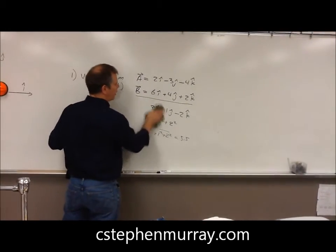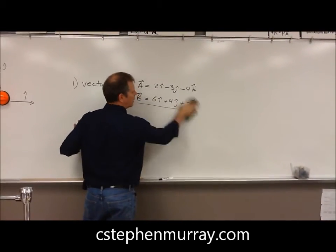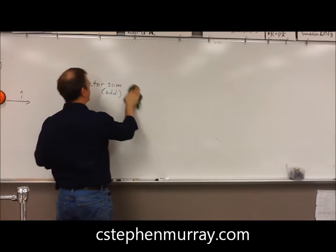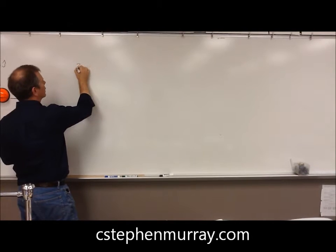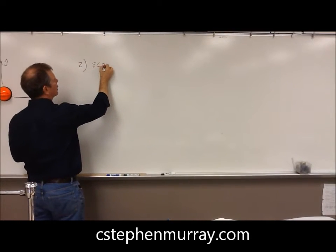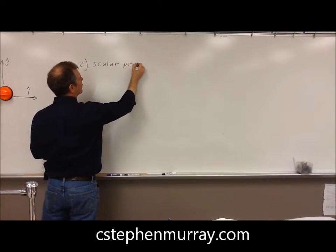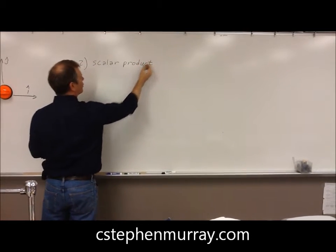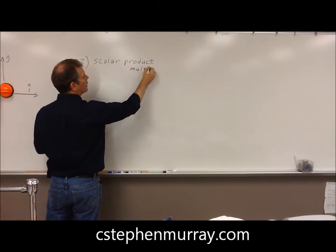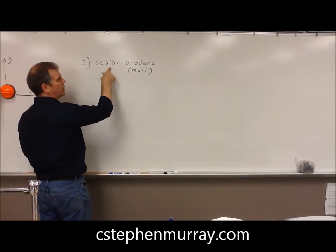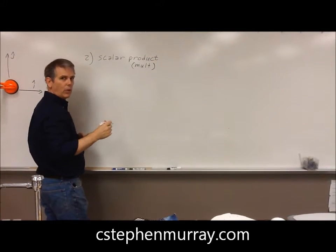Next, let's do a dot product, otherwise known as a scalar product. Product means multiply. Multiply vectors such that you get a scalar. This would be like work. Work is a scalar.